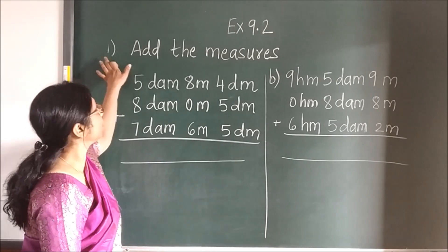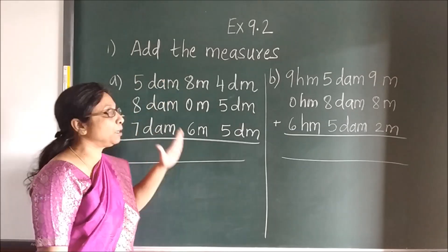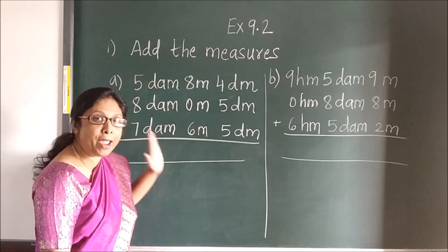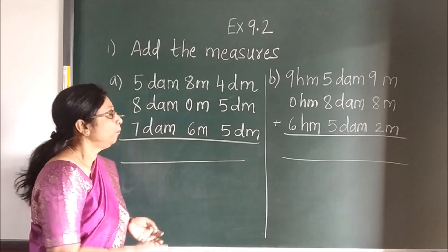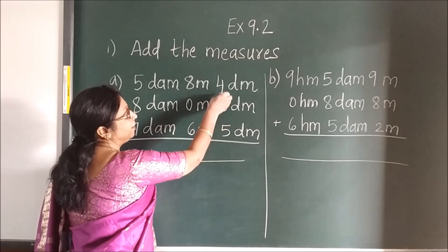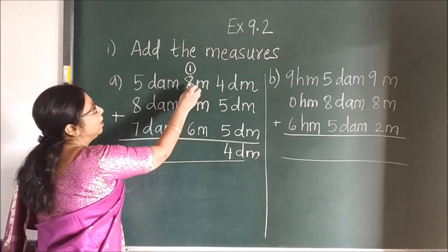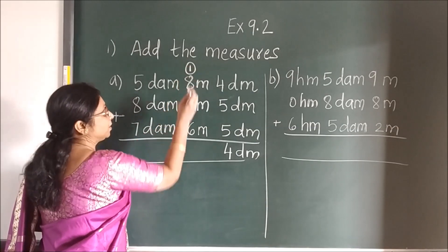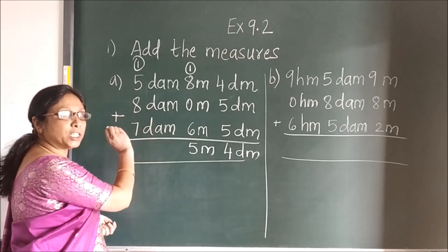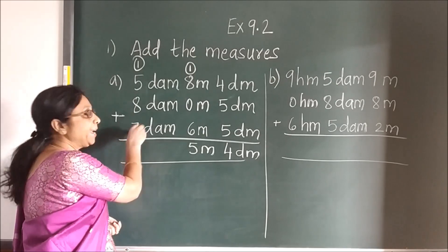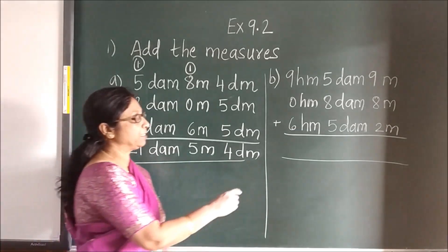Now here — first question: add the measures. When you add this given, children, you have to first place in the proper order. Below DM you will write the DM unit, below M you will write the M unit, then DM you will write the D. And when there is no unit given, you will place 0 there. Then carry out the addition: 5 plus 5 is 10, 10 plus 4 is 14, so write 4 and carry 1. Then 8 plus 6 is 14, 14 plus 1 is 15, write 5 and carry 1. Then 8 plus 5 is 13, 13 plus 7 is 20, and 20 plus 1 is 21.